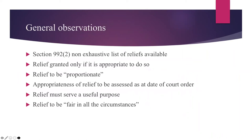First, the remedies in subsection two of section 996 are merely illustrative and non-comprehensive — the court can make any type of order it considers appropriate. For example, the courts have made orders for damages in respect of financial losses suffered by the company or by the petitioner himself, and orders for rectification of the company's statutory books, such as rectifying an unfairly prejudicial share transfer or issue of shares recorded in the company's register of members.